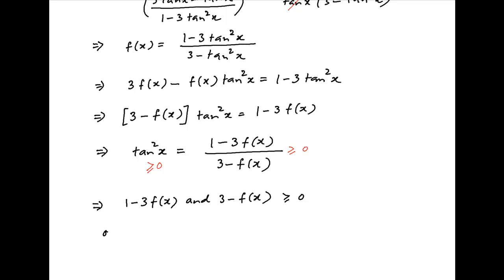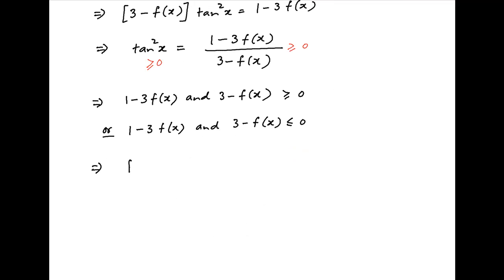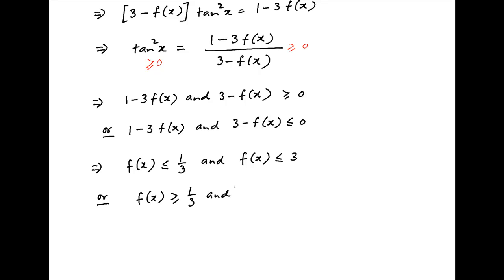This happens in two cases: either both the numerator and denominator are positive, or both are negative. In the first case, f(x) ≤ 1/3 and f(x) ≤ 3. In the second case, f(x) ≥ 1/3 and f(x) ≥ 3.